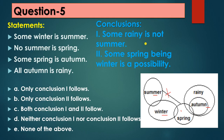Based on the diagram, Conclusion 1: 'some rainy is not summer' — there is no connection between summer and rainy, so yes, it is true. Conclusion 2: 'some spring being winter is a possibility' — yes, it can be. Both Conclusions 1 and 2 follow. The answer is option C — both conclusion first and second follow.